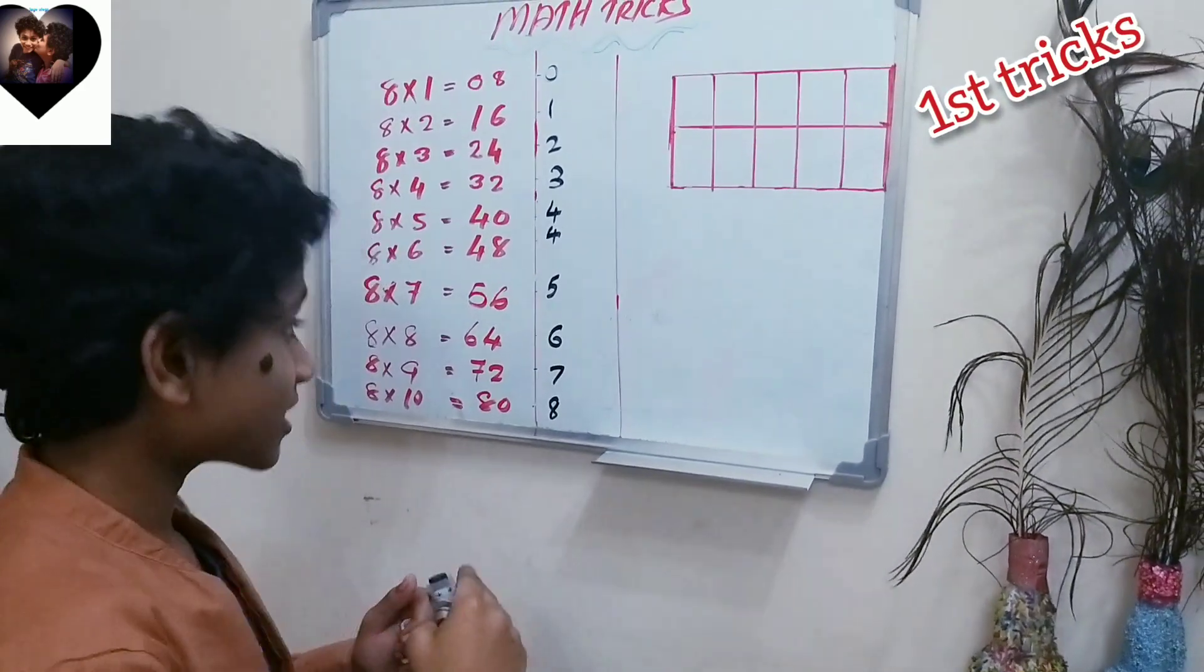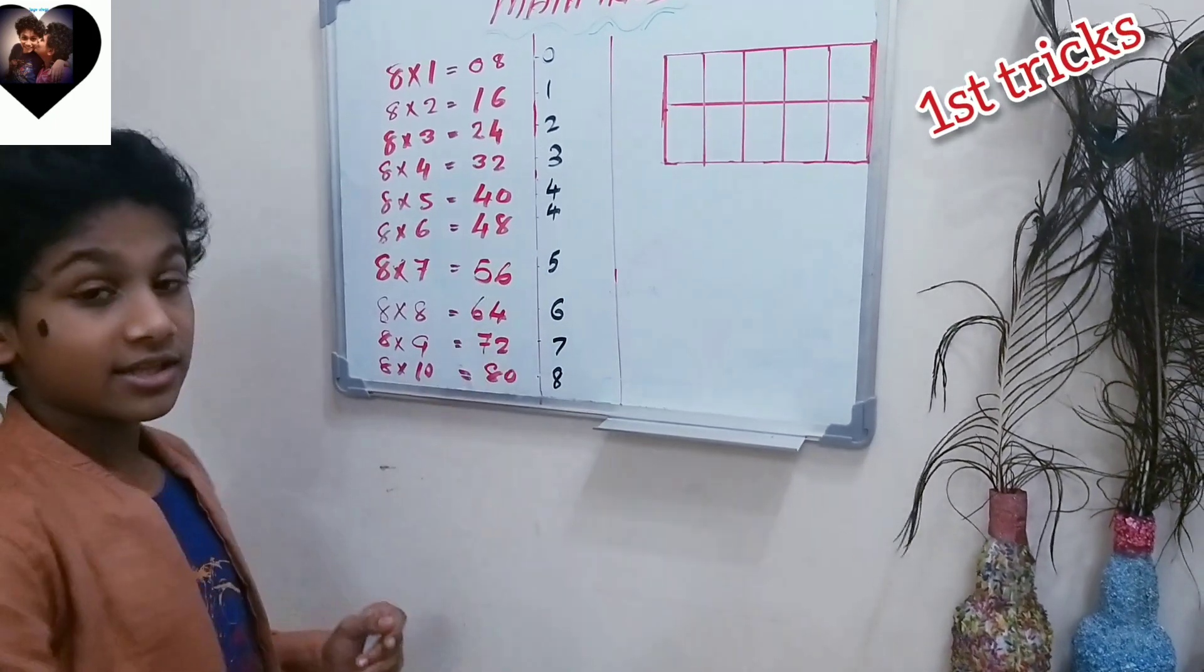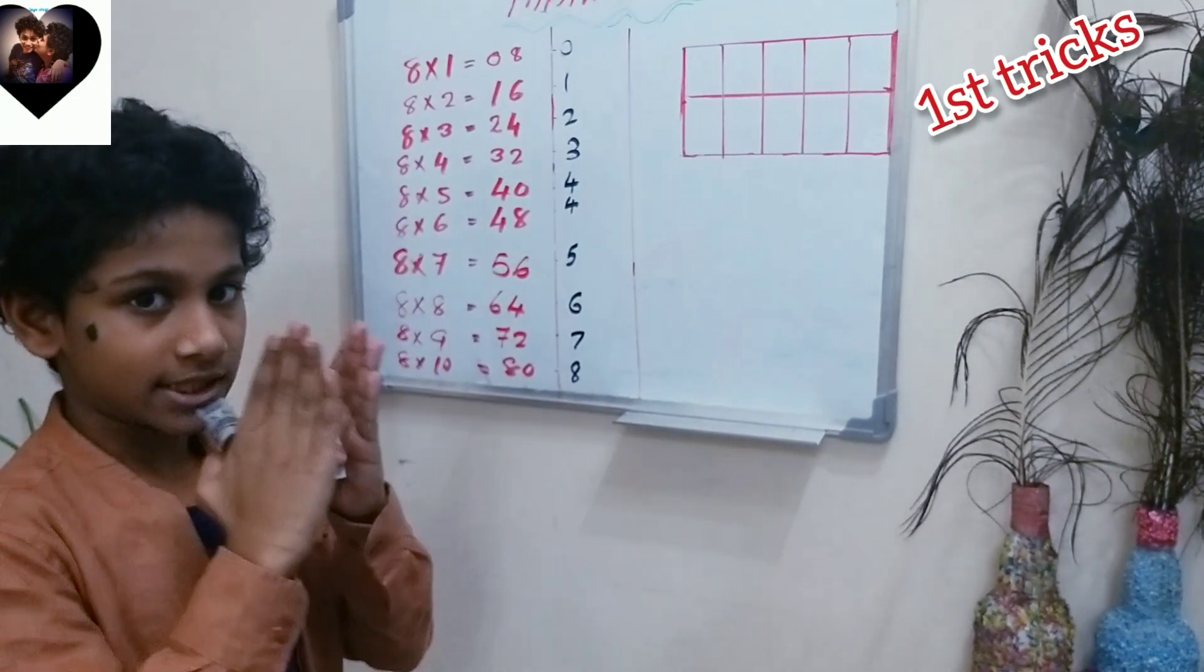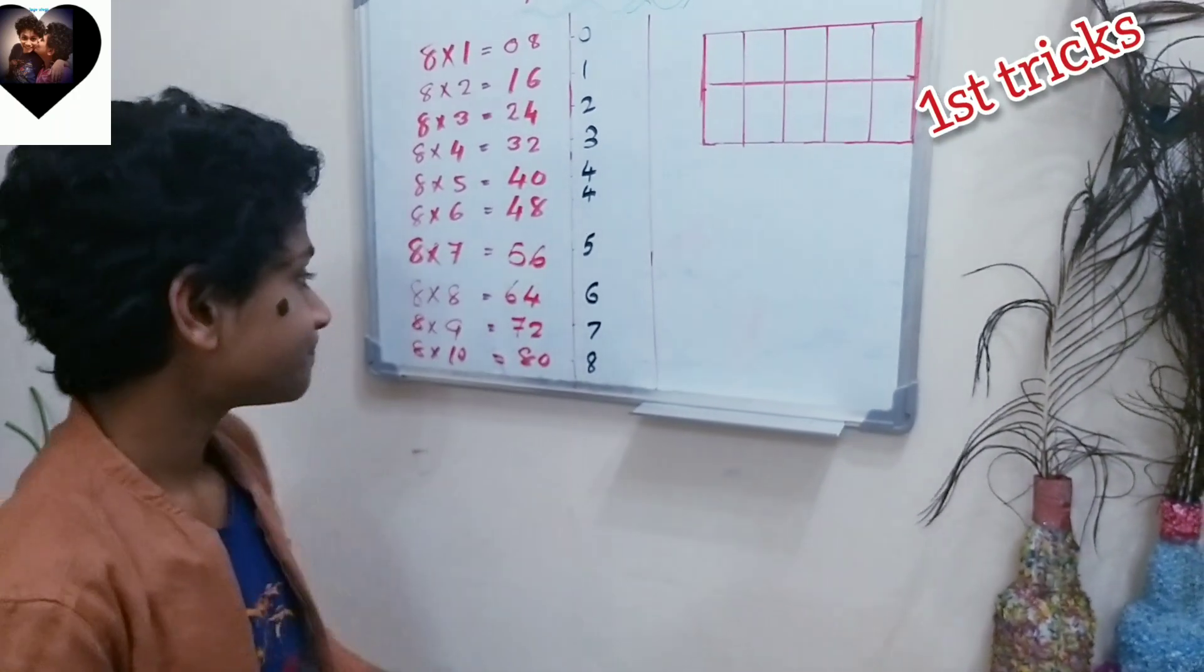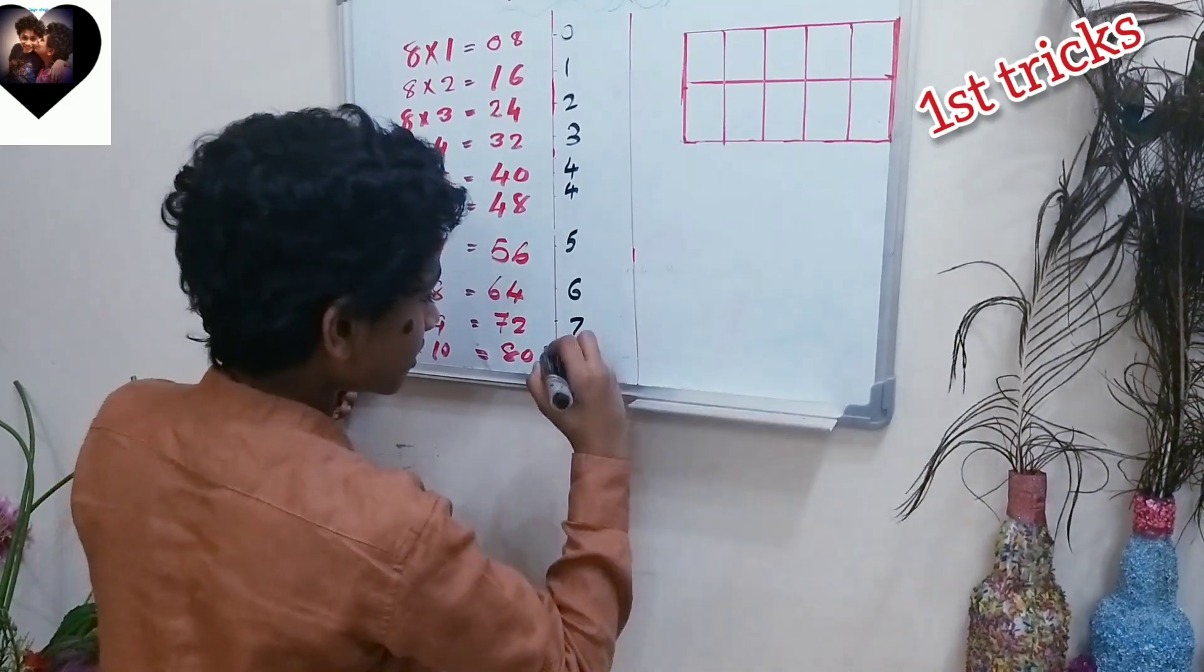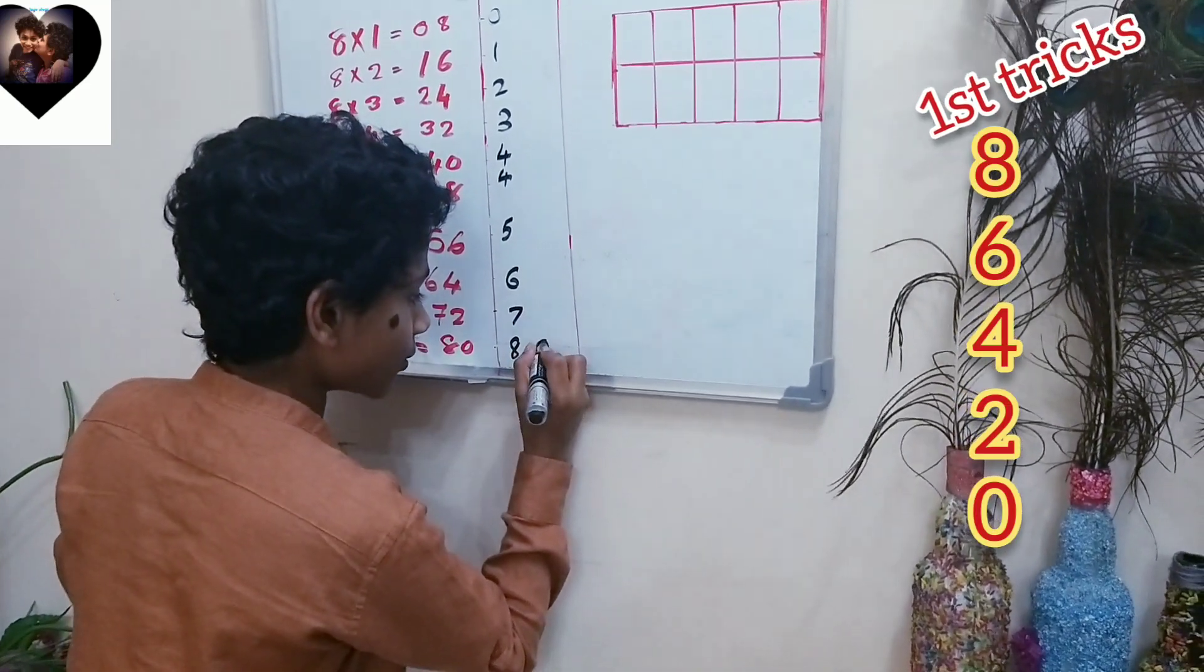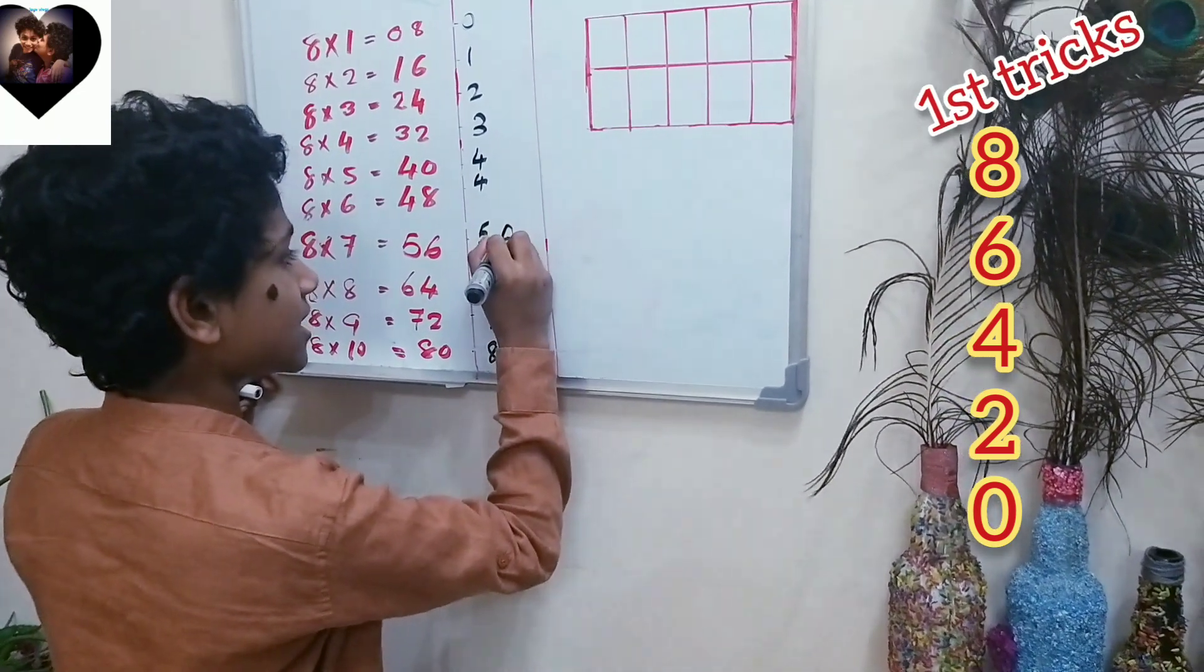After that, what you should write is 0 to 8 in the ones place. How are you going to write it? You write it in twos, like skip counting. You guys can say it's the 2 times table, and the 2 times table is really easy, so I don't need to make a trick for it. So you write 0, 2, 4, 6, 8.